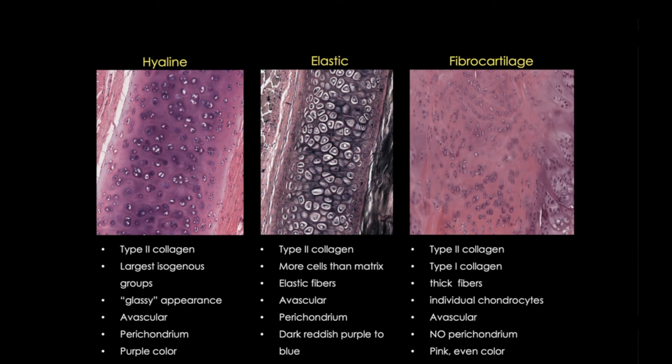Let's briefly review the three types. All three cartilage types contain type 2 collagen and are avascular, but only fibrocartilage contains type 1 collagen, which you'll see as those pinkish-red fibers. Elastic cartilage has more cells, less matrix, and those thin elastic fibers. And hyaline cartilage has large isogenous groups, few fibers, and a rich, shiny appearance. I hope these tips will help you solve this case of mistaken identity. Thanks for stopping by.